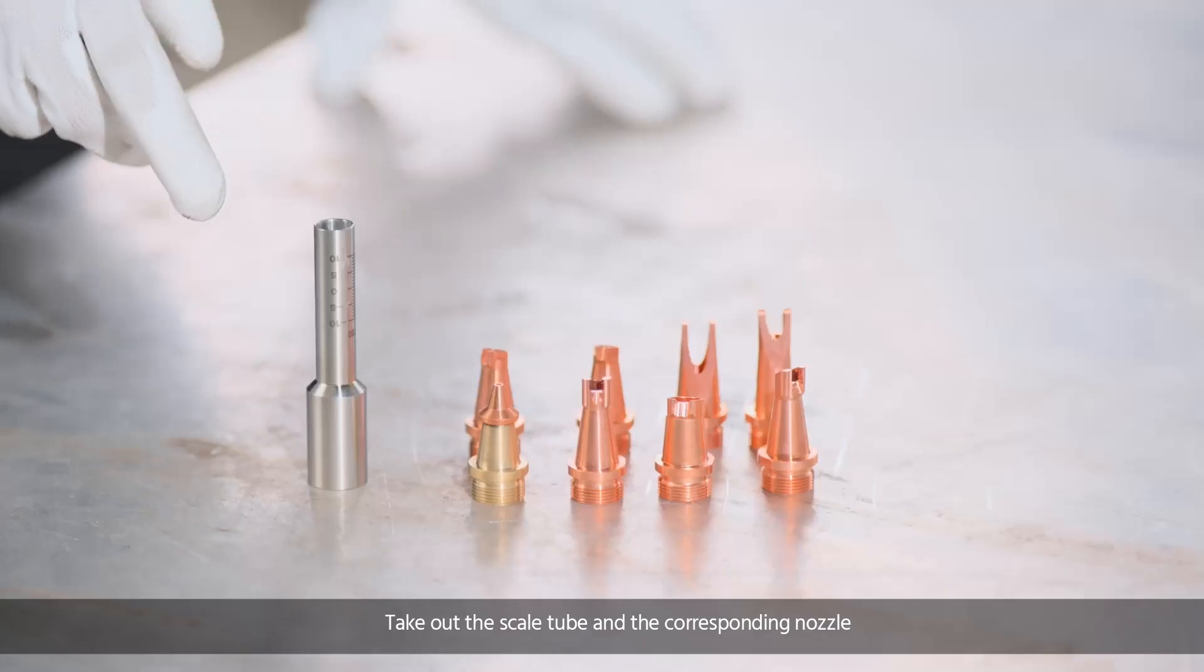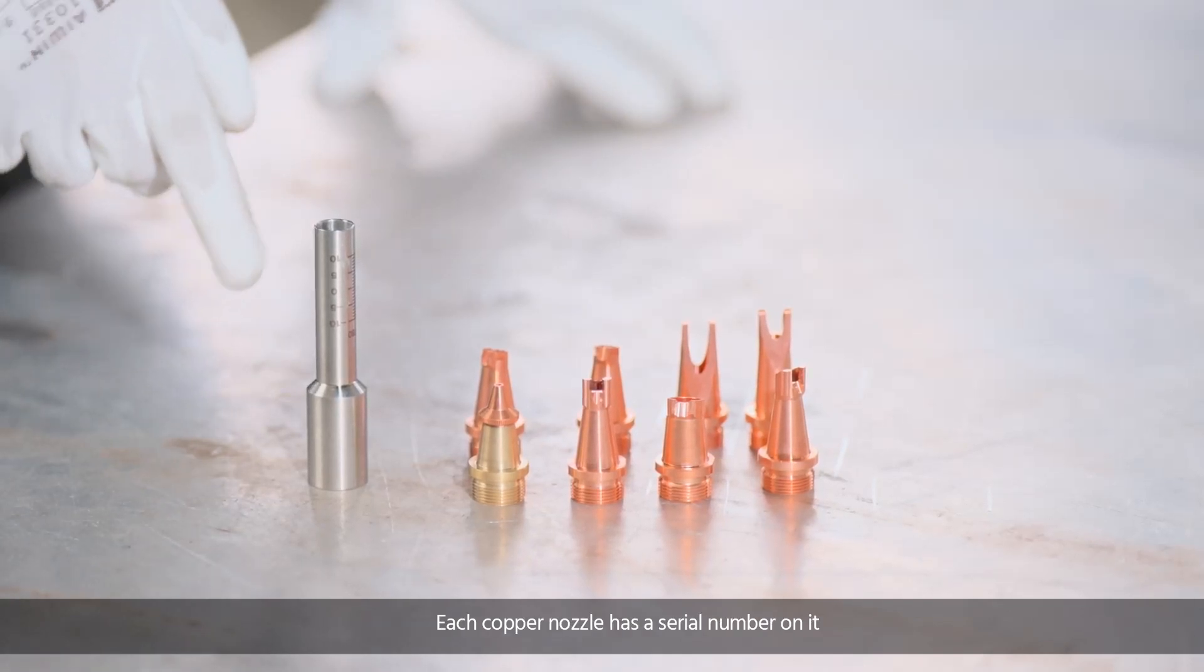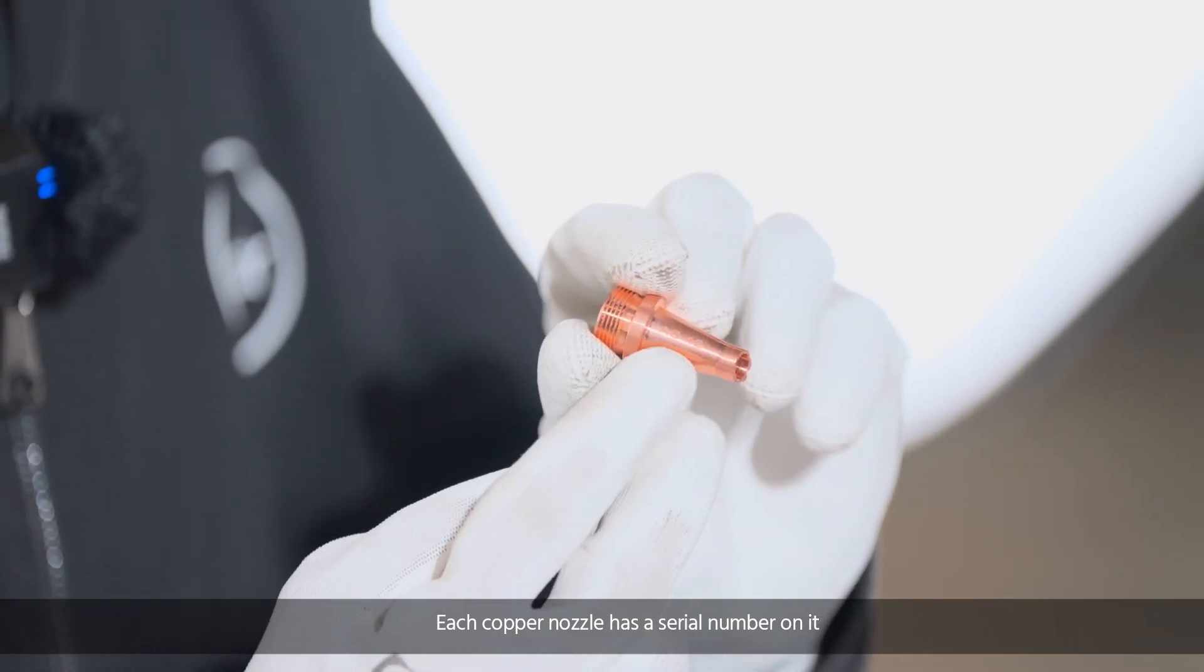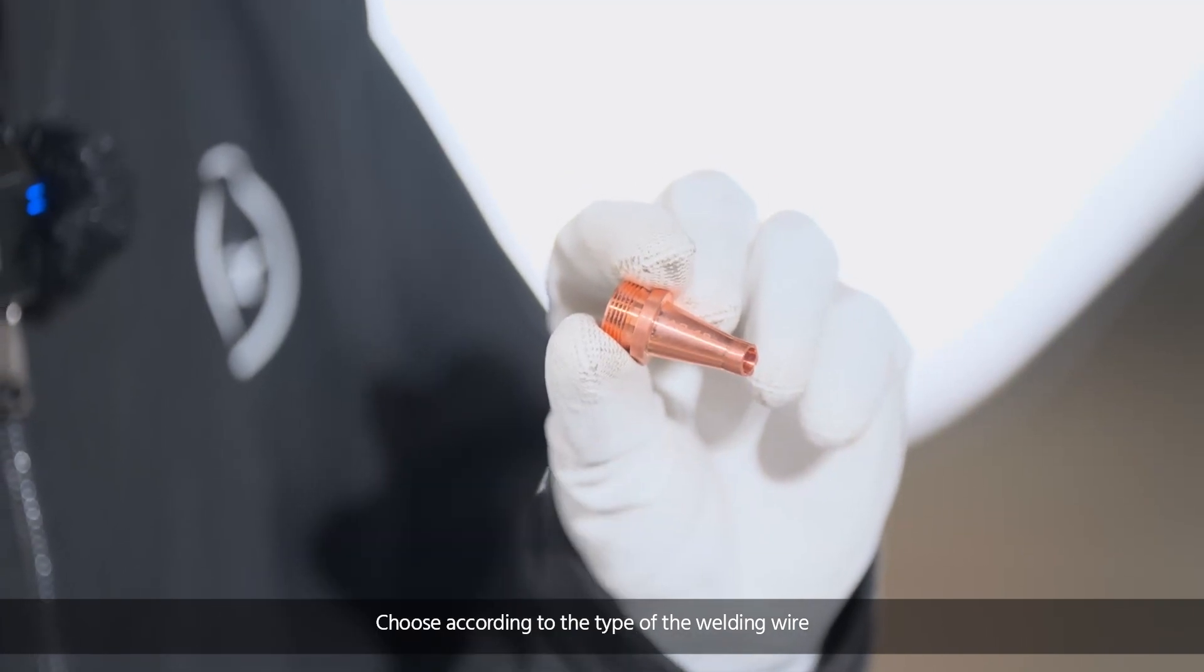Take out the scale tube and the corresponding nozzle. Each copper nozzle has a serial number on it. Choose according to the type of welding wire.